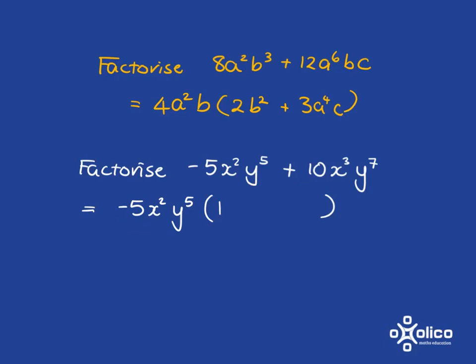Now here, what, negative 5 multiplied by what gets me to positive 10? Well, it's got to be a negative 2 to get me to positive 10. And then x squared multiplied by x will get me to x cubed. And y to the 5 multiplied by y squared will get me to y to the 7.